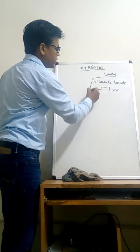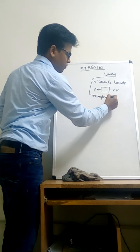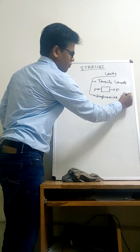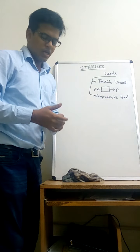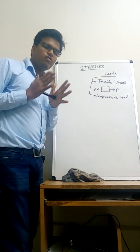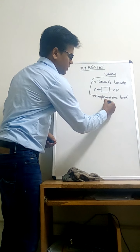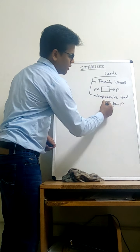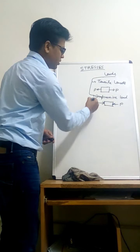The second type of load is compressive load. Compressive load has a compression tendency. If I press this marker inside, that will be a compressive load on this marker. The forces are acting inside the body, towards the inside of the body.